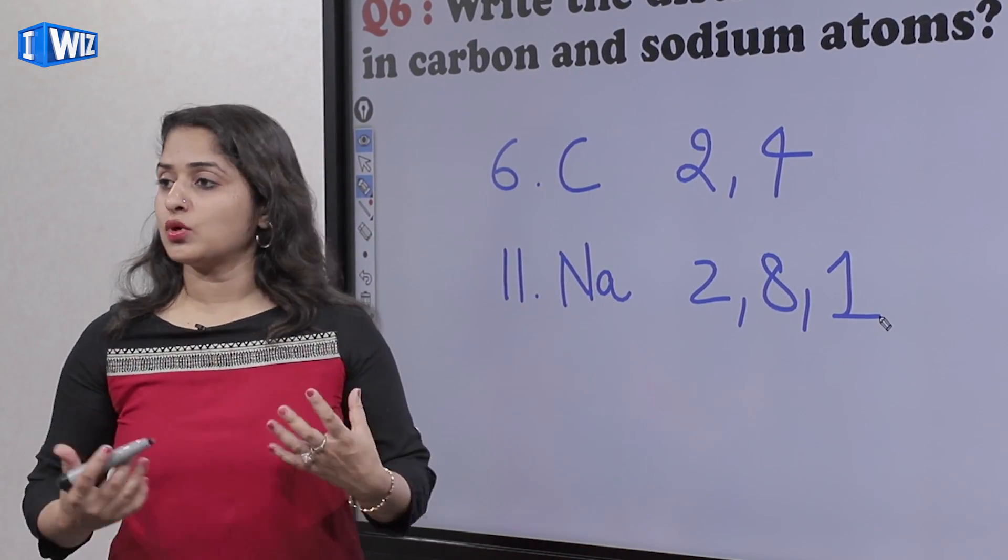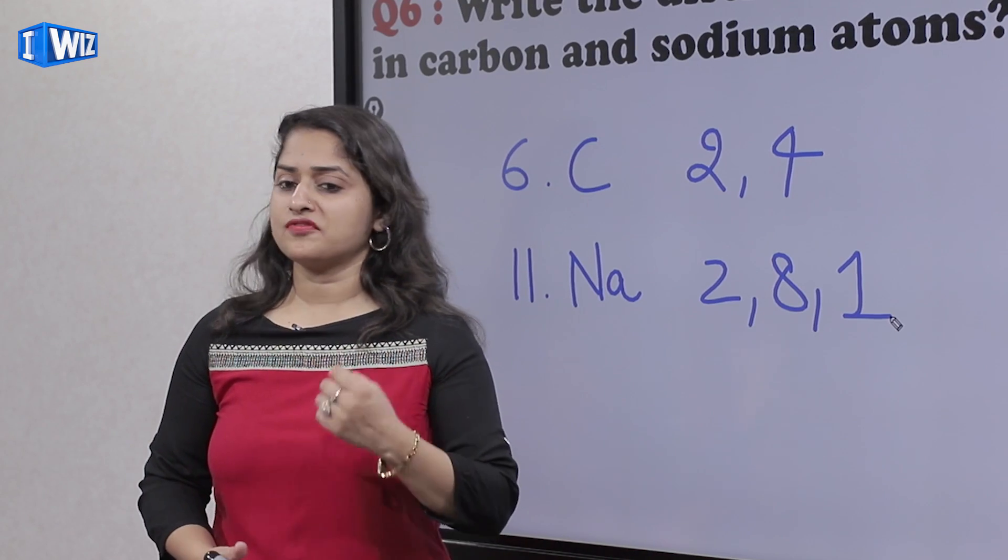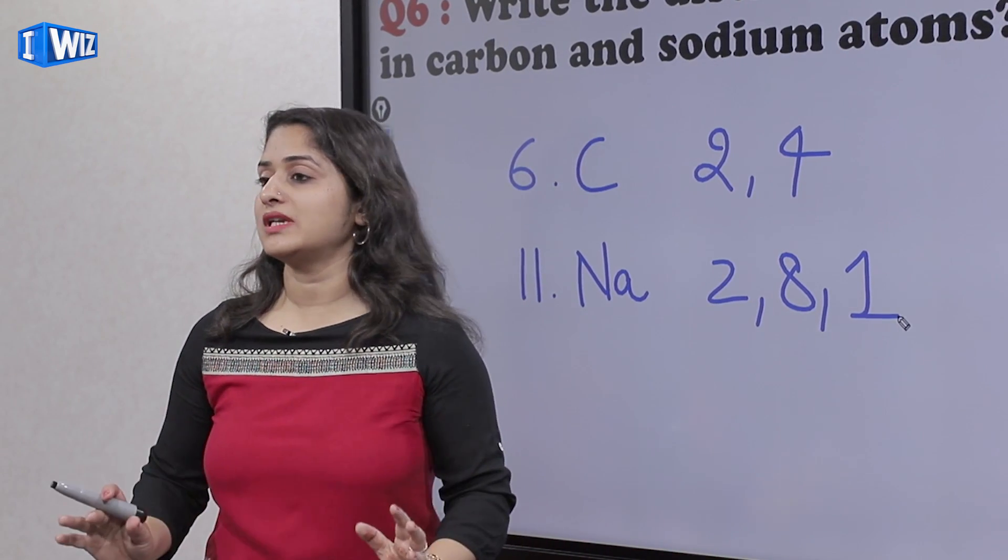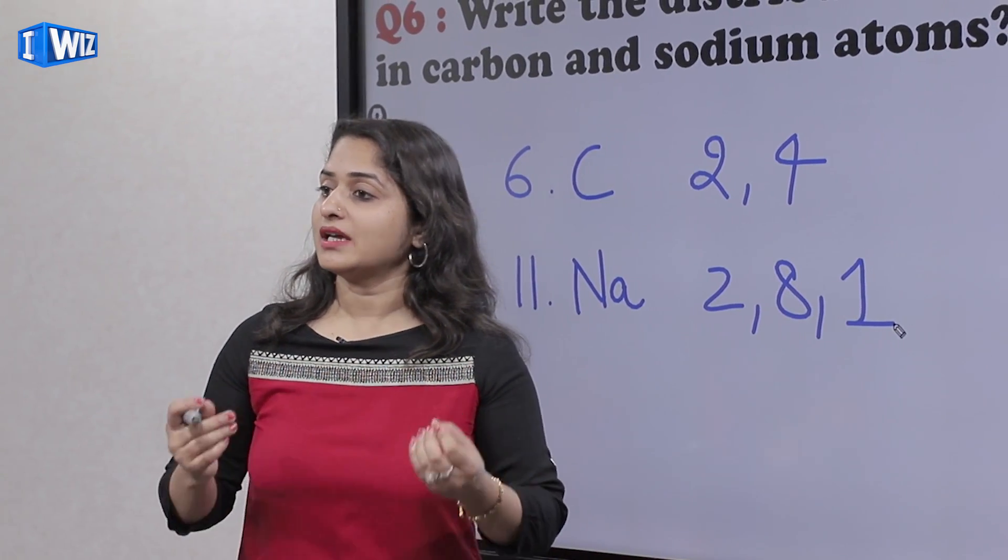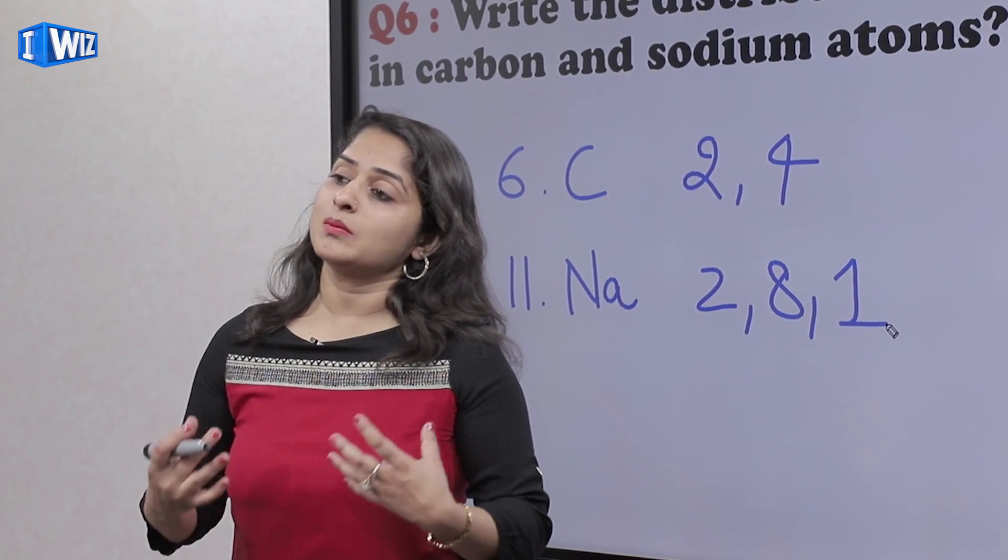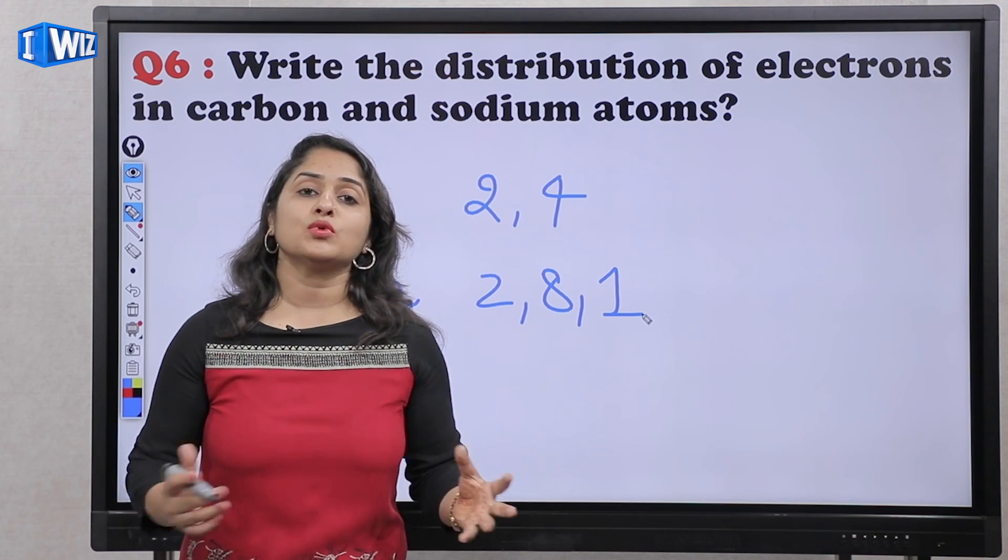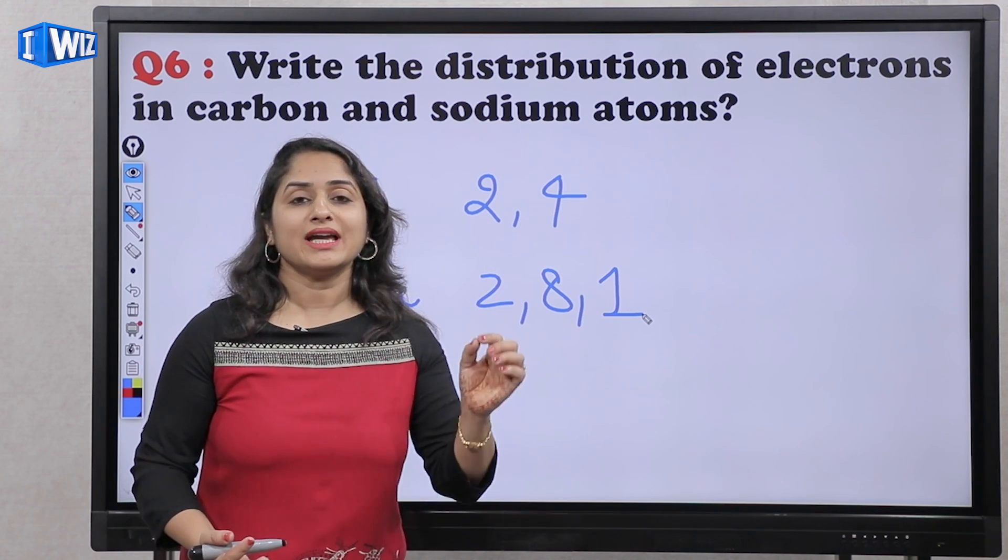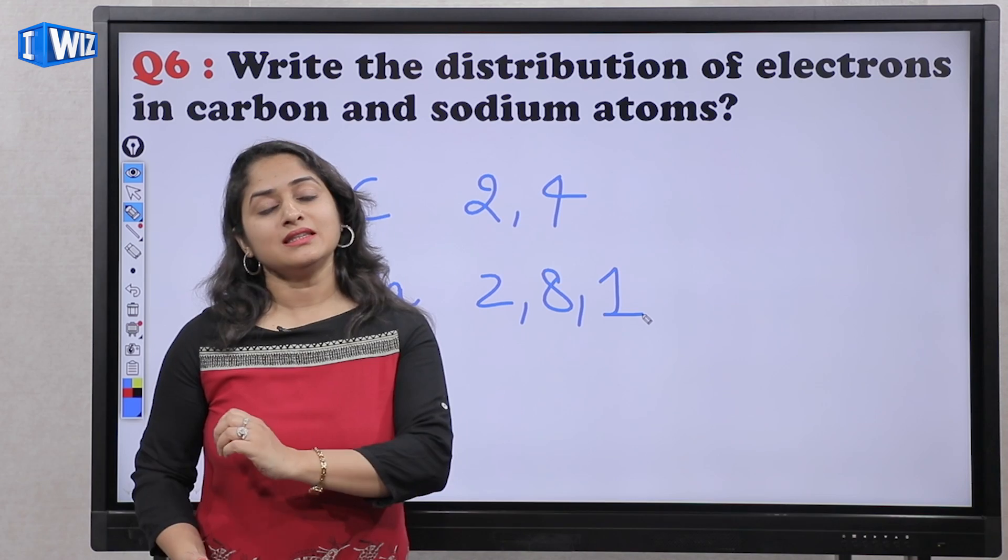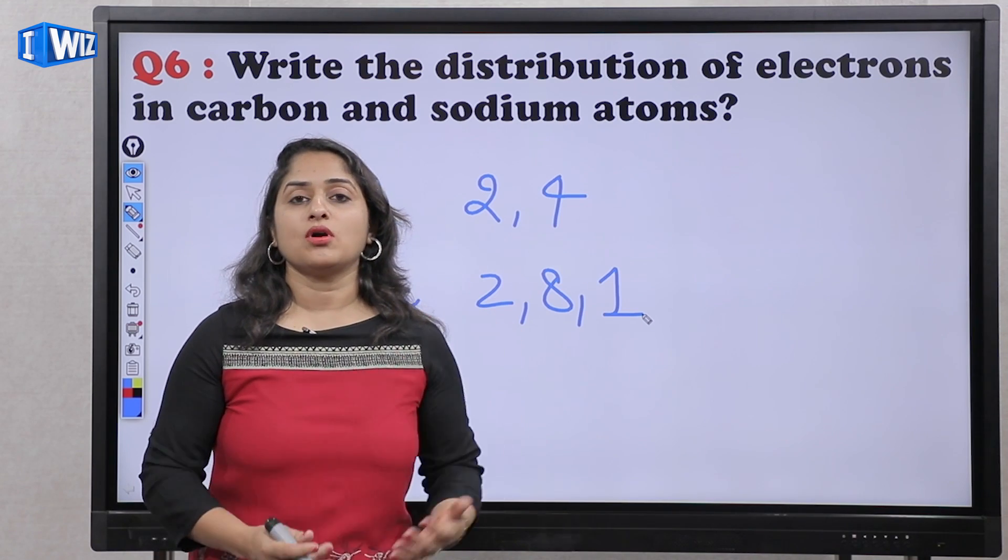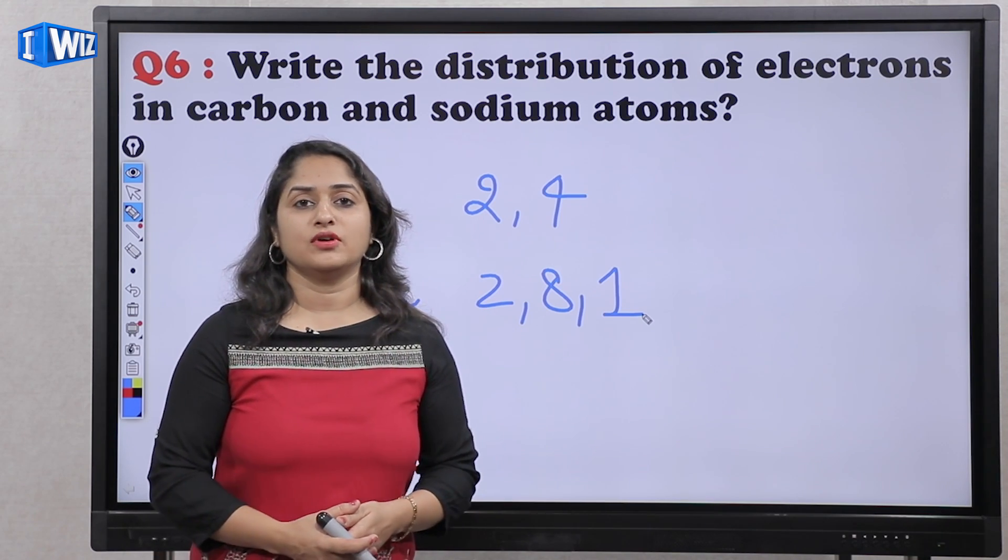Aap agar kisi bhi shell mein aapko poucha gaya hai ki kitne electrons hai, toh first shell mein hamisha two, maximum two electrons ho sakte hai. Second shell mein eight hoongi, third mein bhi maximum eight ho sakte hai, then 18, 18, 32, 32. Inh sab ko bolte hai magic numbers: two, eight, eight, eighteen, eighteen, 32, 32. Pure periodic table mein yehi configuration follow hooti hai.